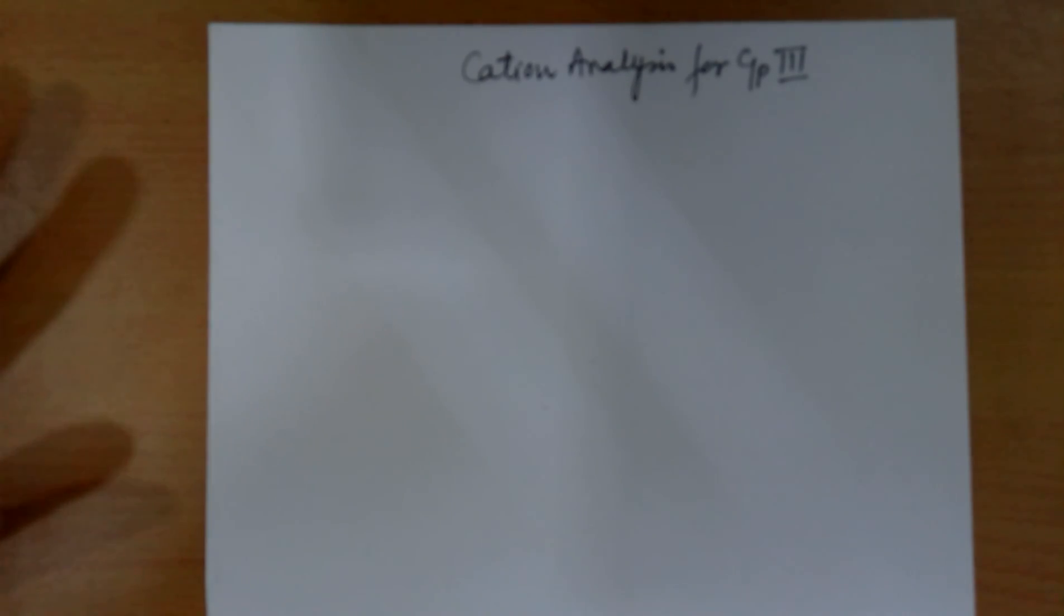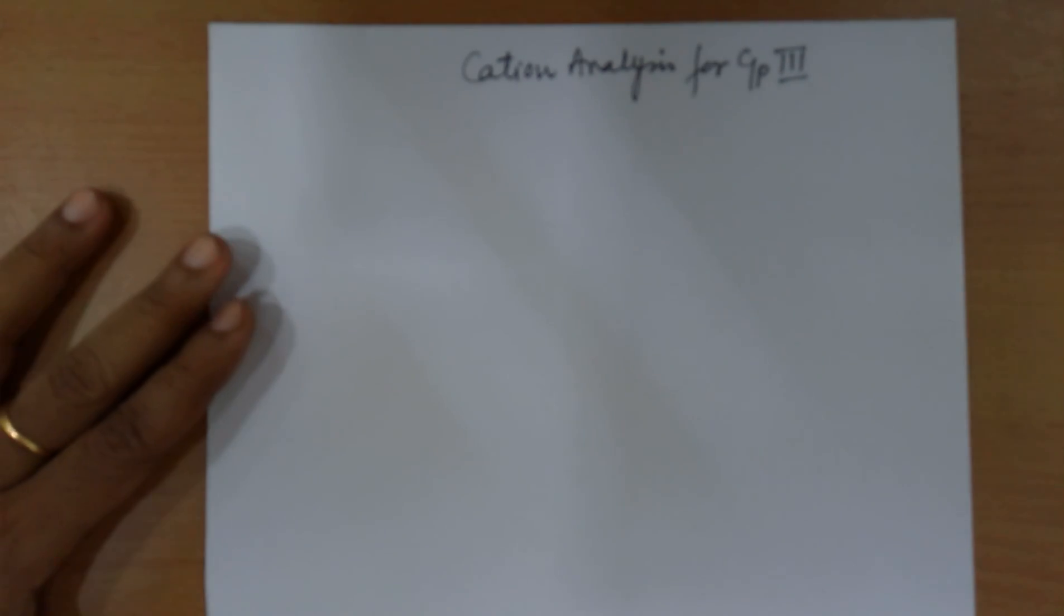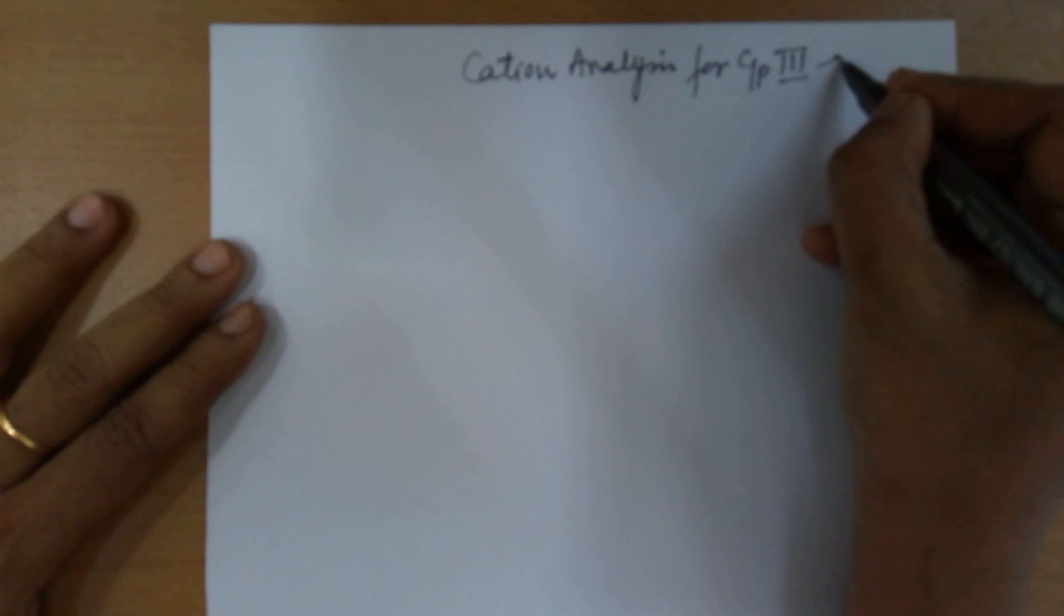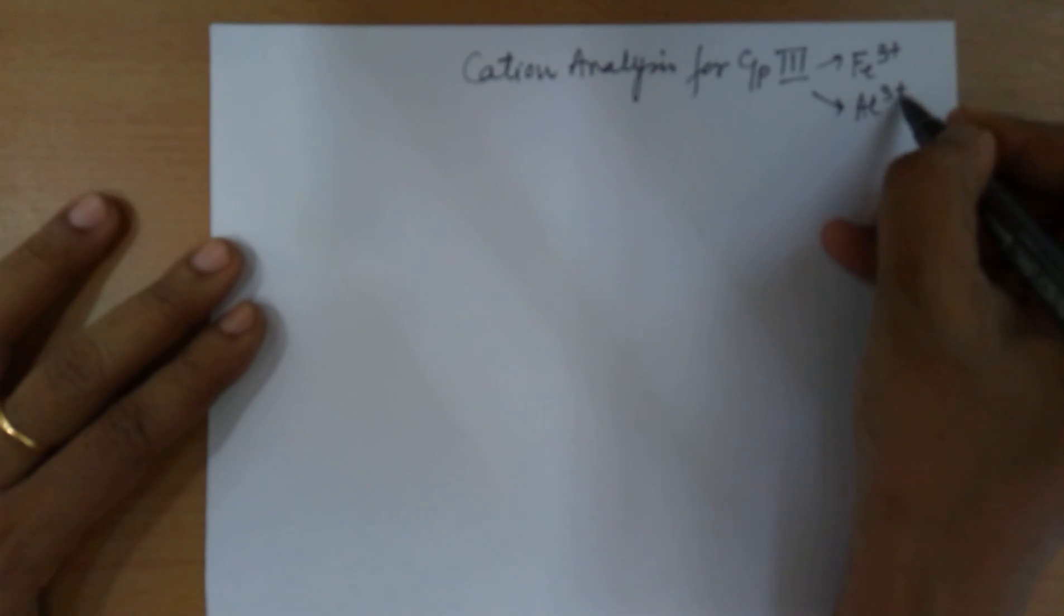Good evening students. Today we will be doing the cation analysis for group 3. The cations belonging to group 3 are ferric and aluminium.